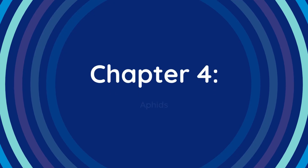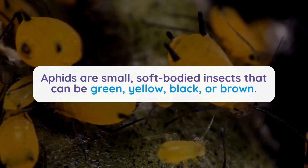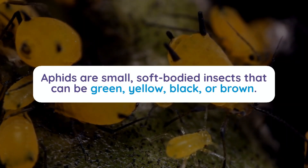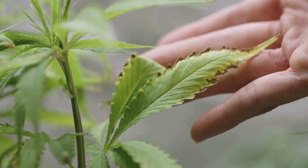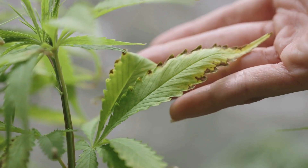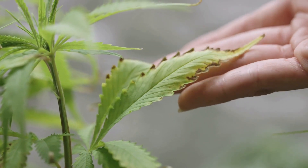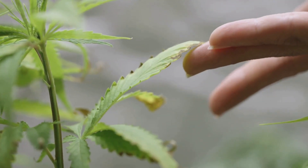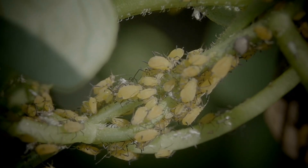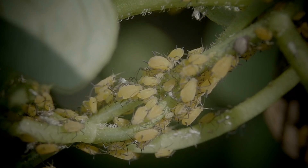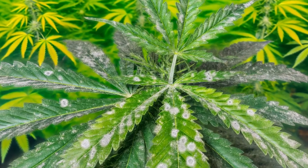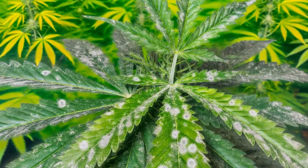Chapter 4: Aphids. Aphids are small, soft-bodied insects that can be green, yellow, black, or brown. They feed on the sap of cannabis plants, causing leaves to curl, yellow, and stunt plant growth. Aphids also excrete a sticky substance called honeydew, which can attract other pests and lead to mold growth.